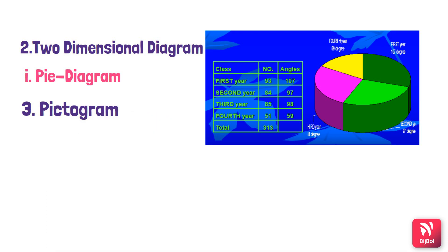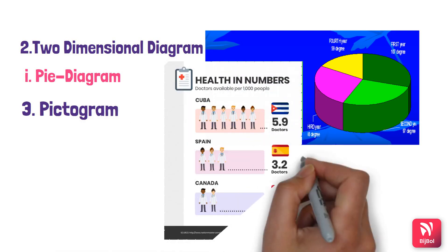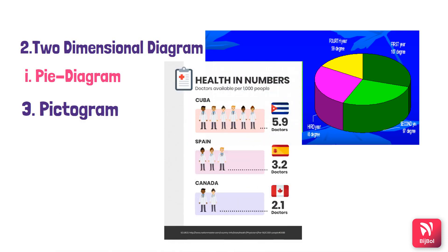Next is the pictogram. A pictogram uses small pictures or symbols for presenting data. They are especially used for the common man to understand. In this diagram you can see the representation of doctors available per thousand people.